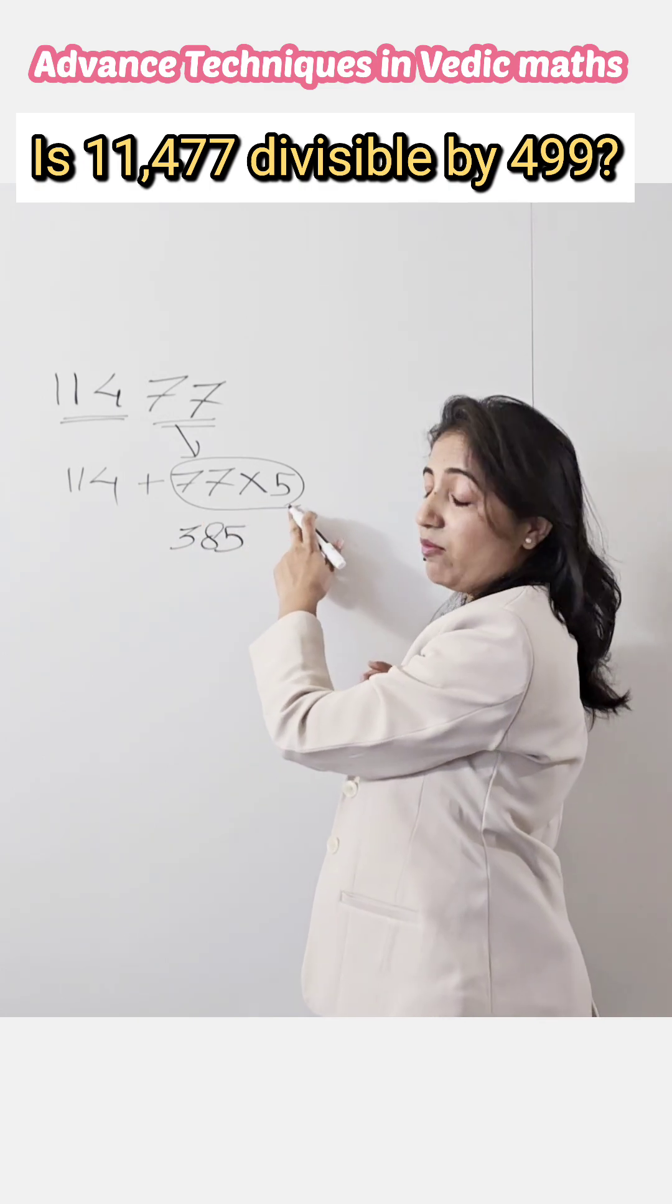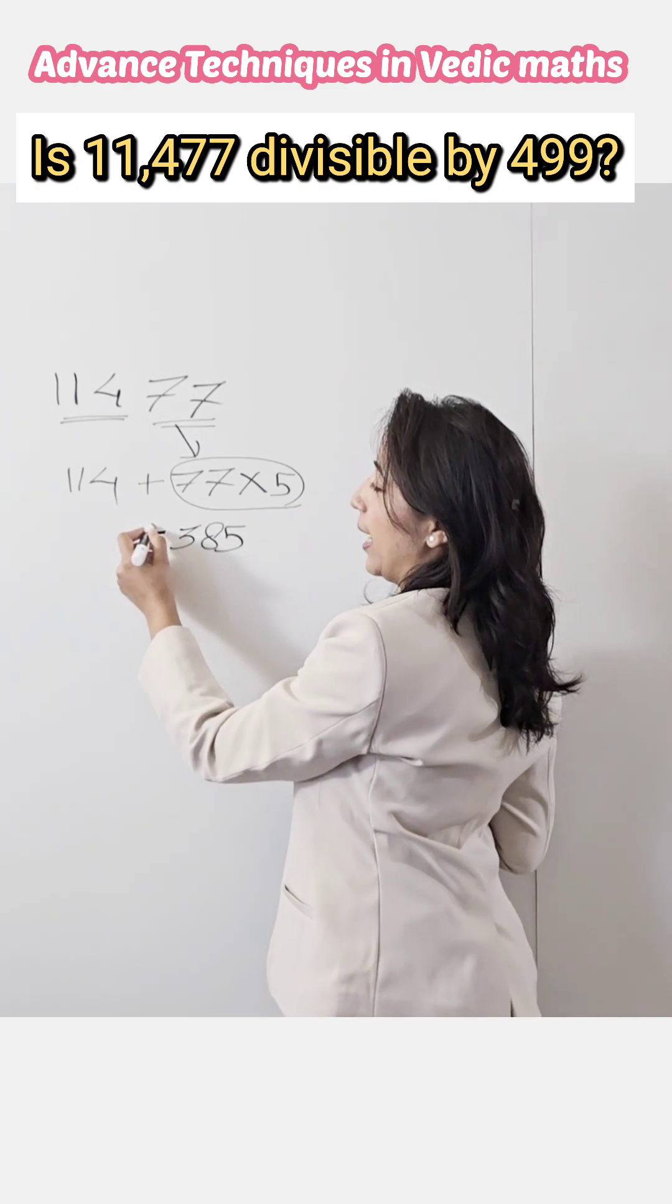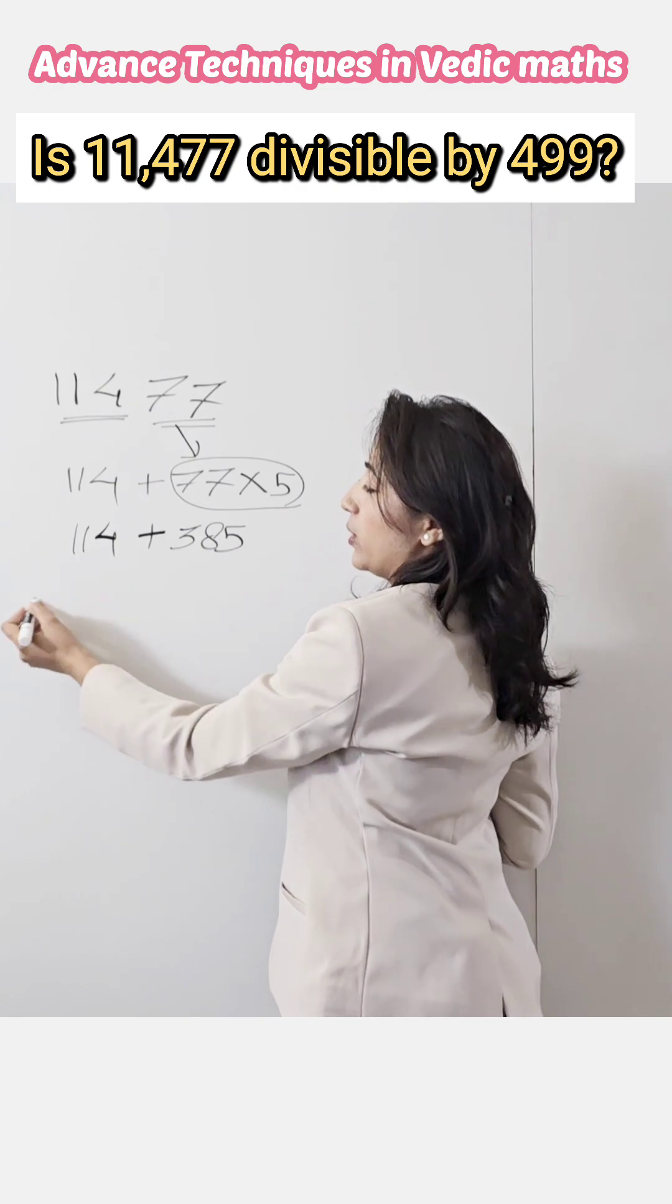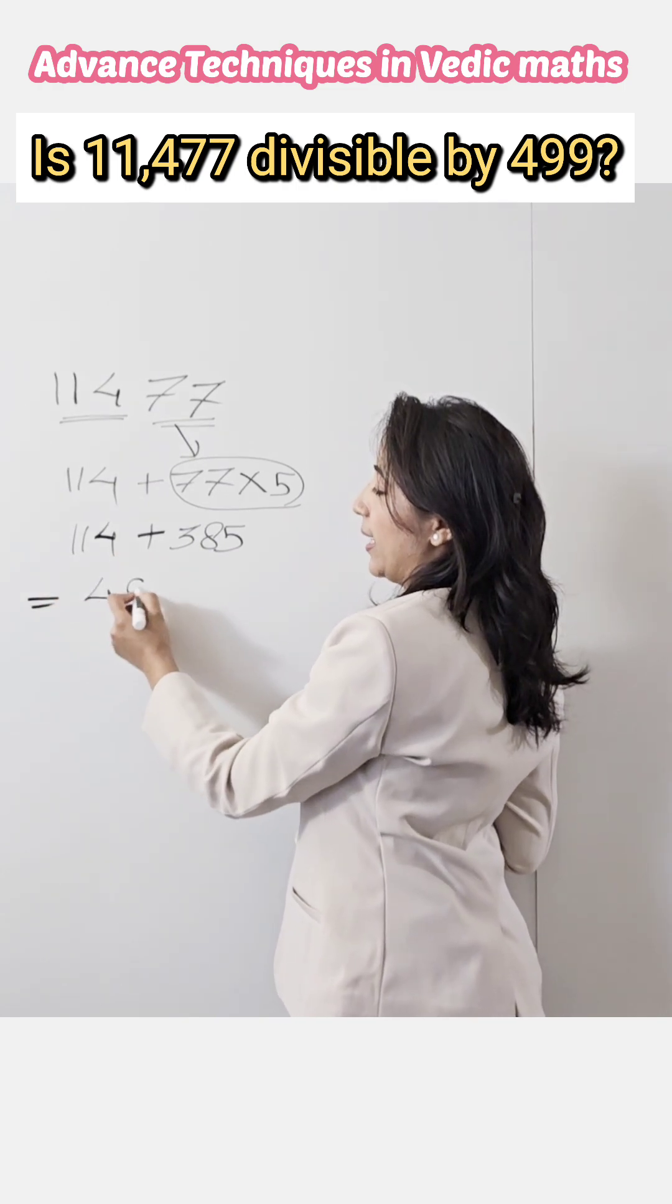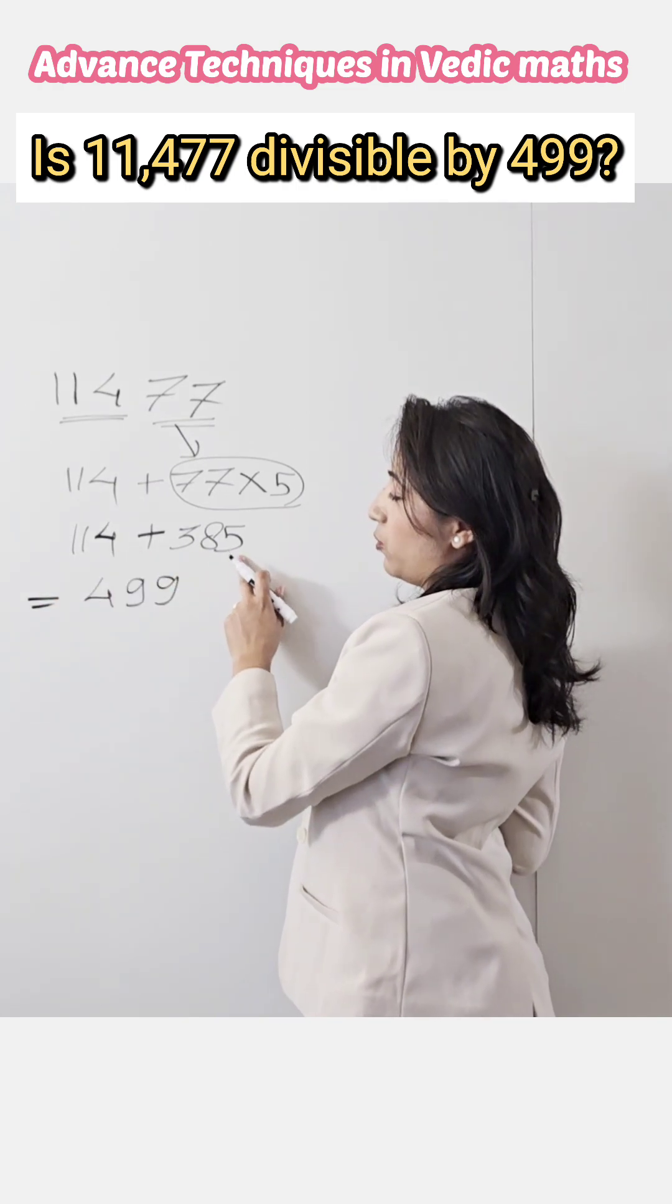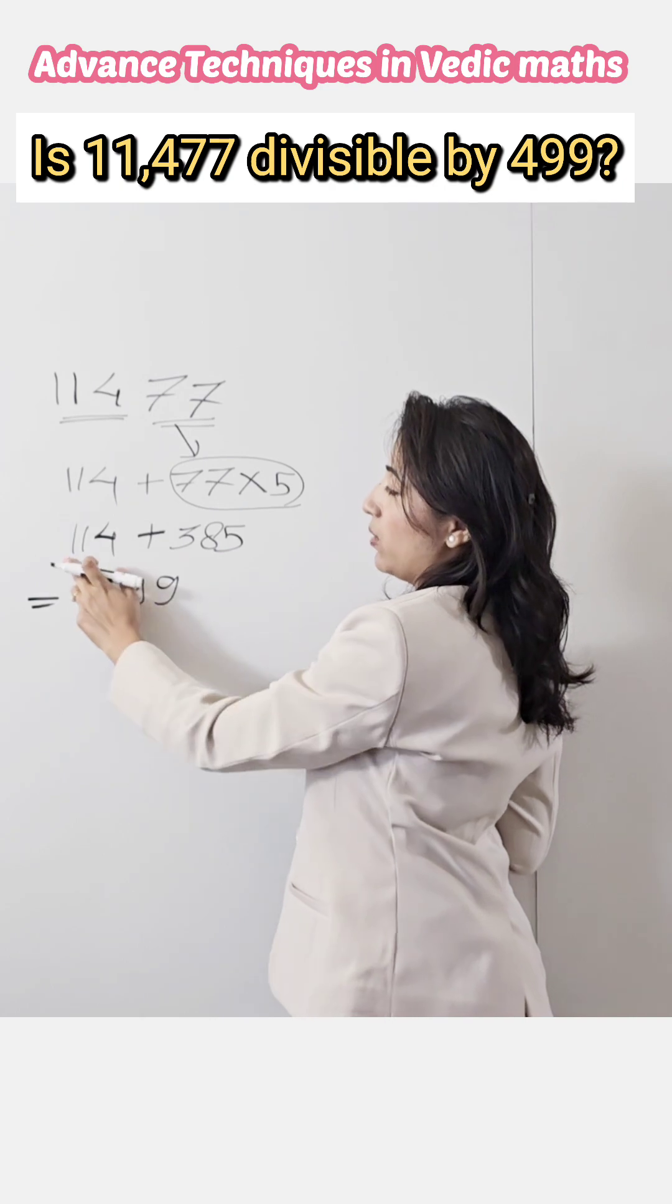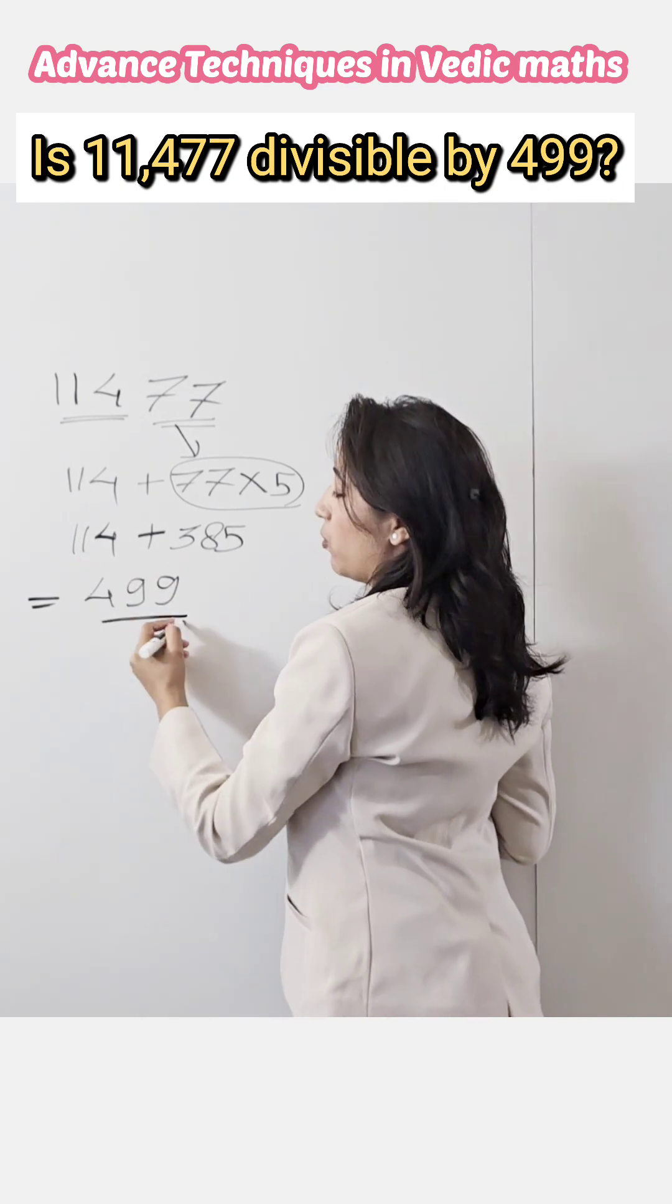So, product of 77 and 5 is 385, and add 114. So the answer is 499. 5 plus 4 is 9, 1 plus 8 is 9, 1 plus 3 is 4. So the answer is 499.